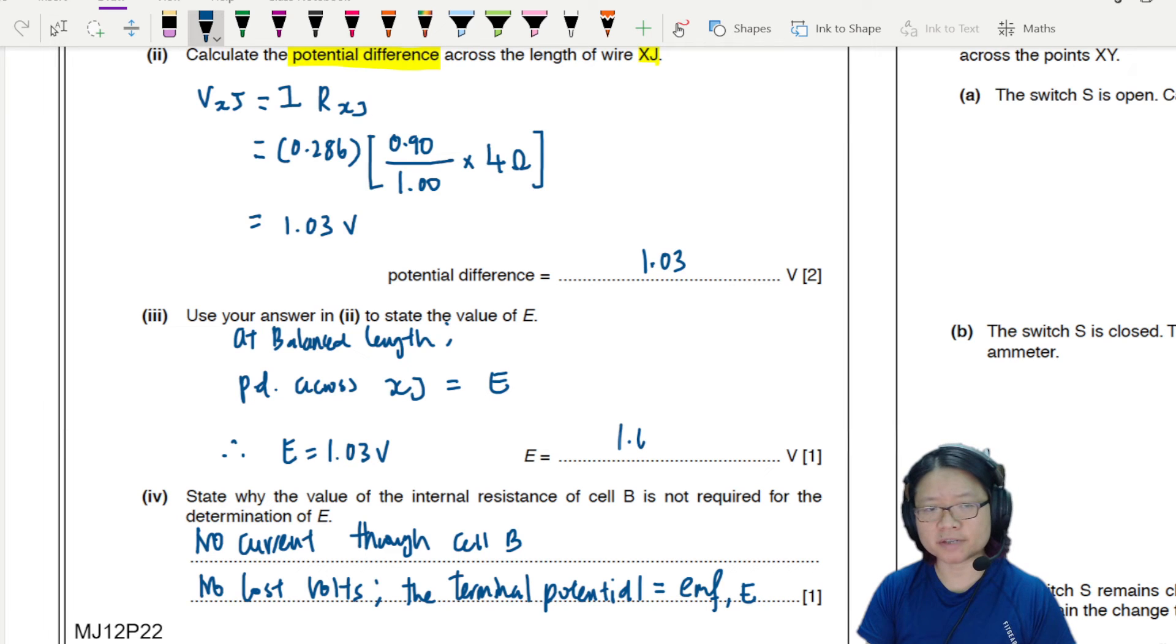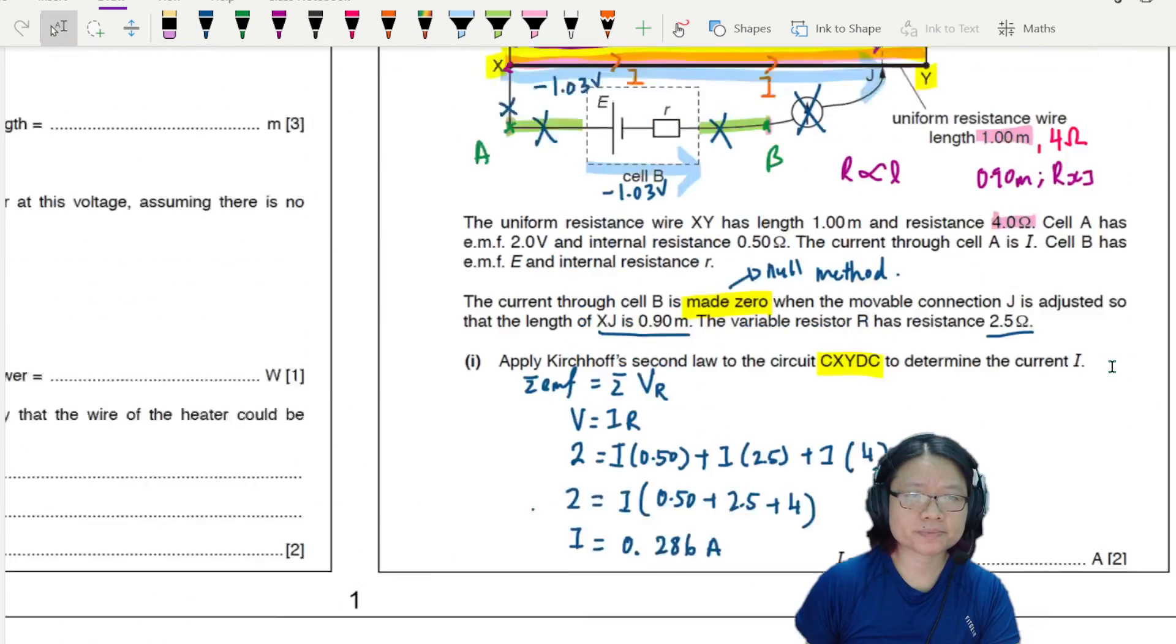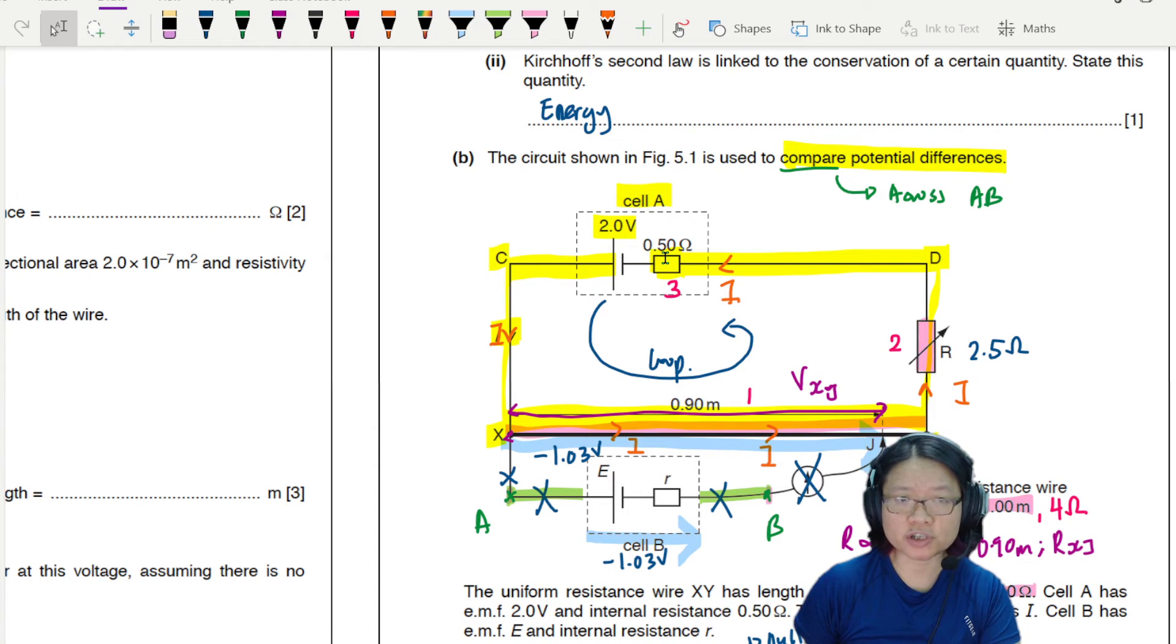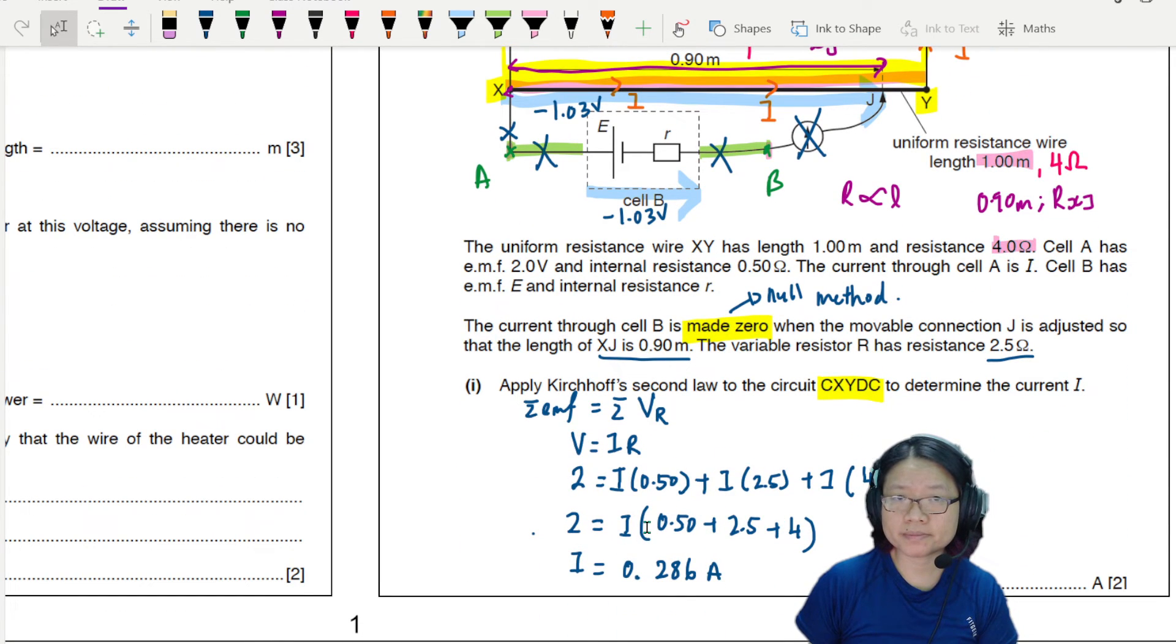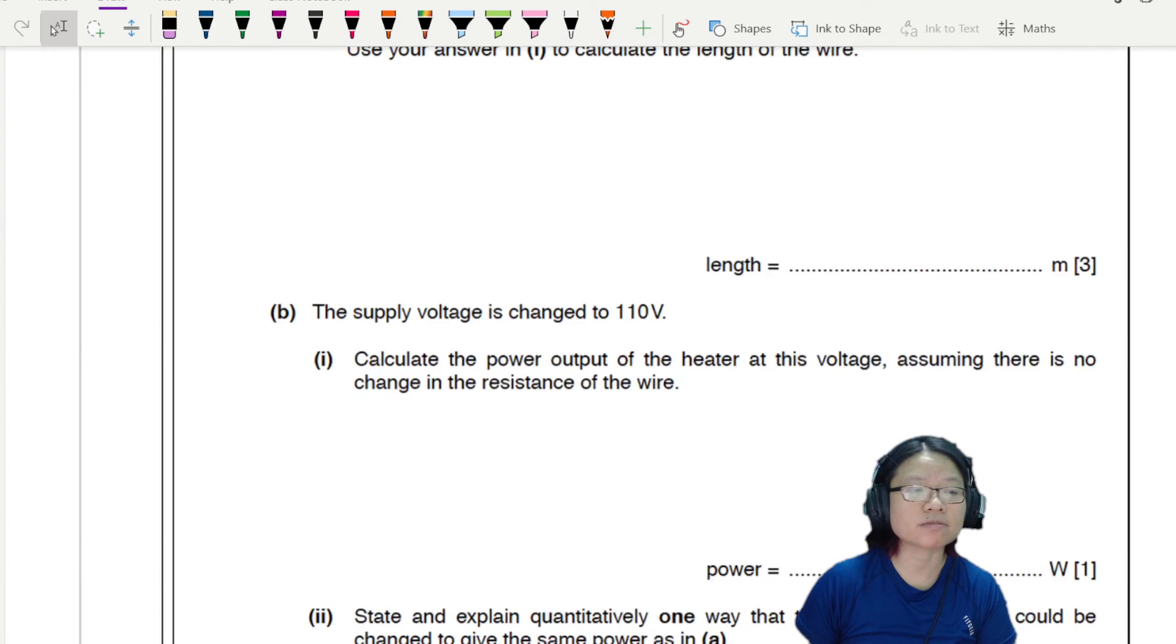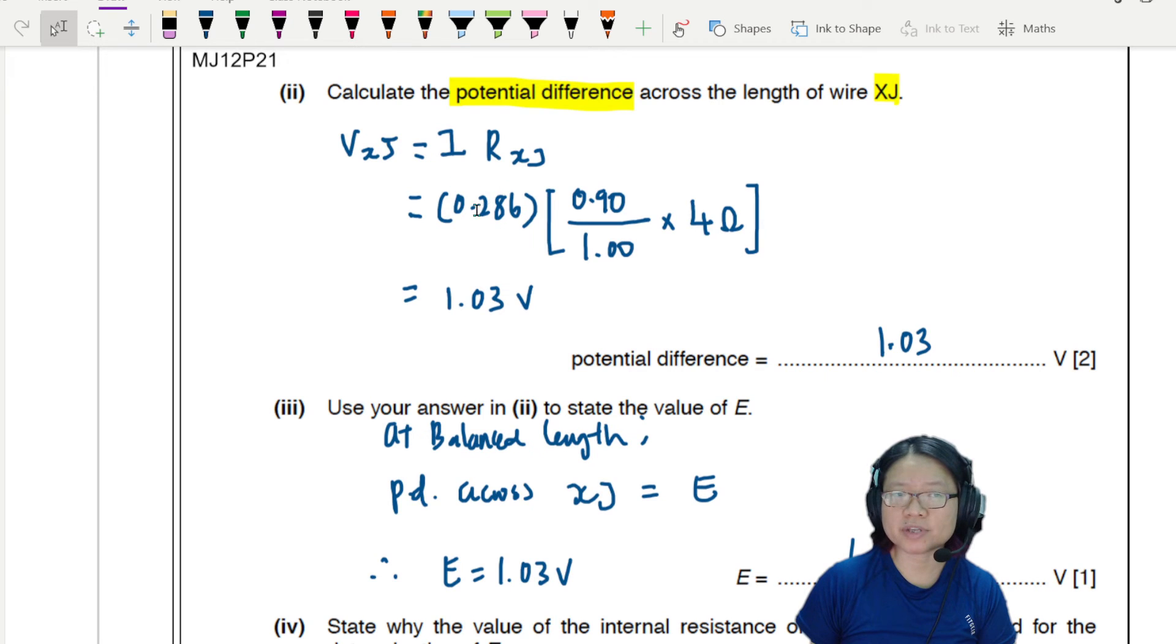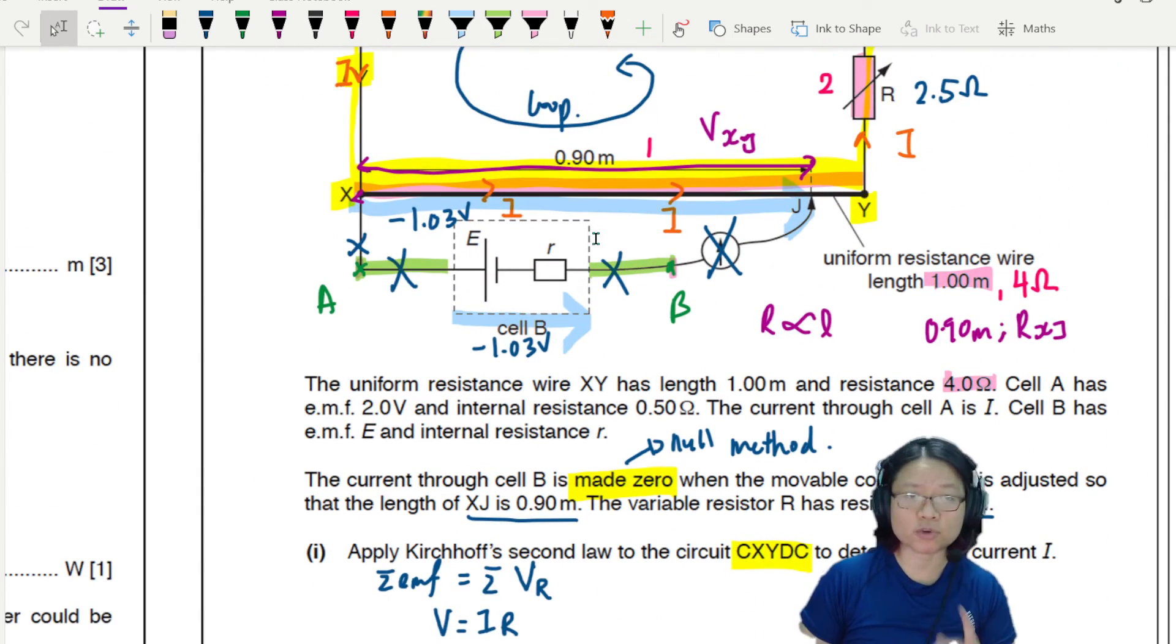So this is why we can actually take the reading directly. No lost volts. So the terminal potential, which is what you're measuring right now, because you're connecting A, B directly across the terminals of the battery, so terminal potential is straight away equal to EMF. E. EMF of cell B. So sometimes if they ask you a circuit question, normally, if it's MCQ, you have to do a lot of work to answer that one question, because it's really testing your understanding. But as usual, if it's a structure question, if you really understand it, then you get more marks for showing your understanding. So in a nutshell, what we're doing here is we have a 2-volt battery, and the potential difference is shared across wire, resistor, and internal resistance. But as long as we can achieve balance length, the first thing we did was to find the current. Once we find the current, we know that the potential difference across XJ is 1.03, because we use V equal to IR here.